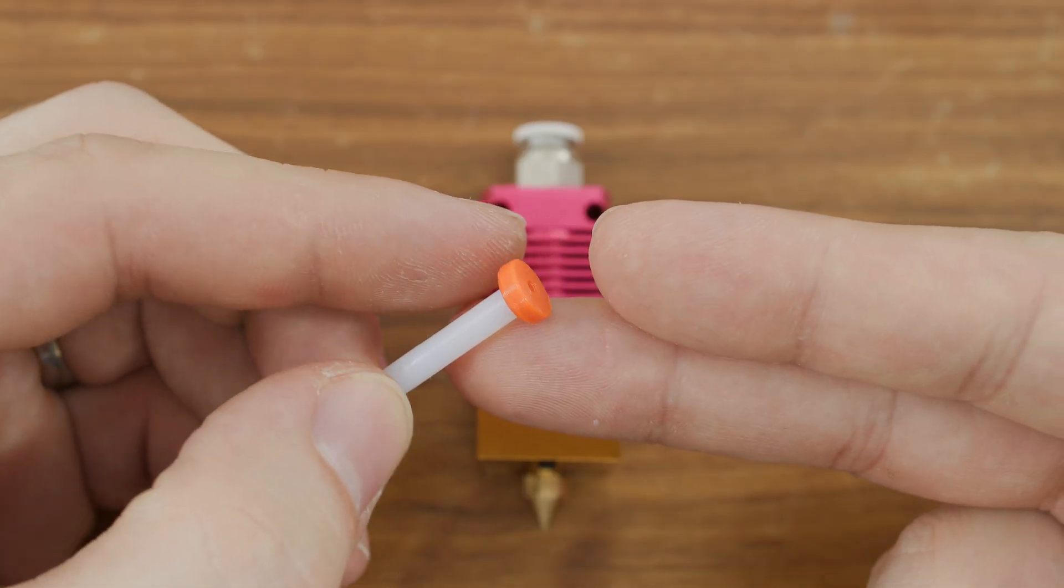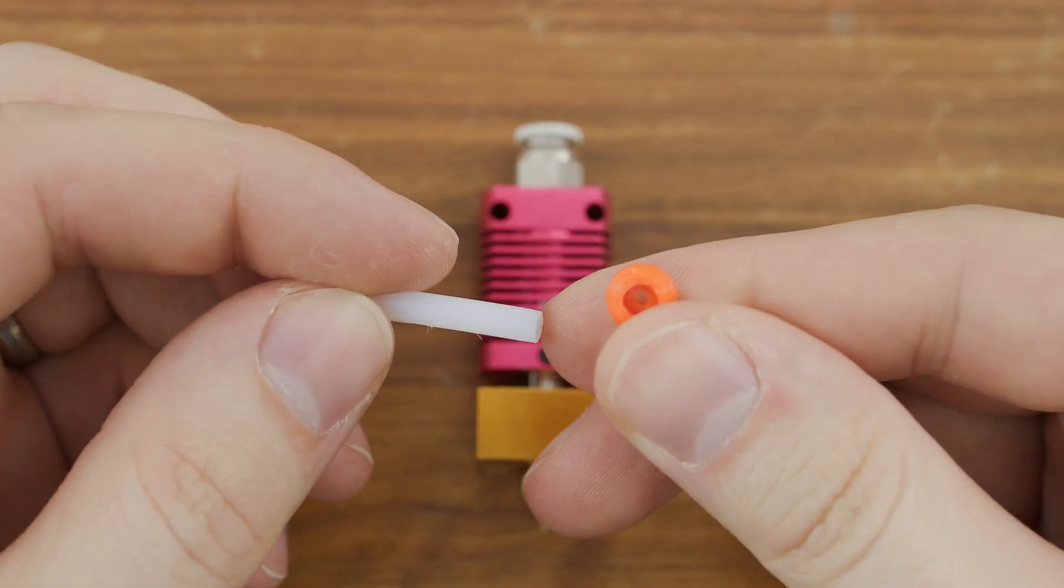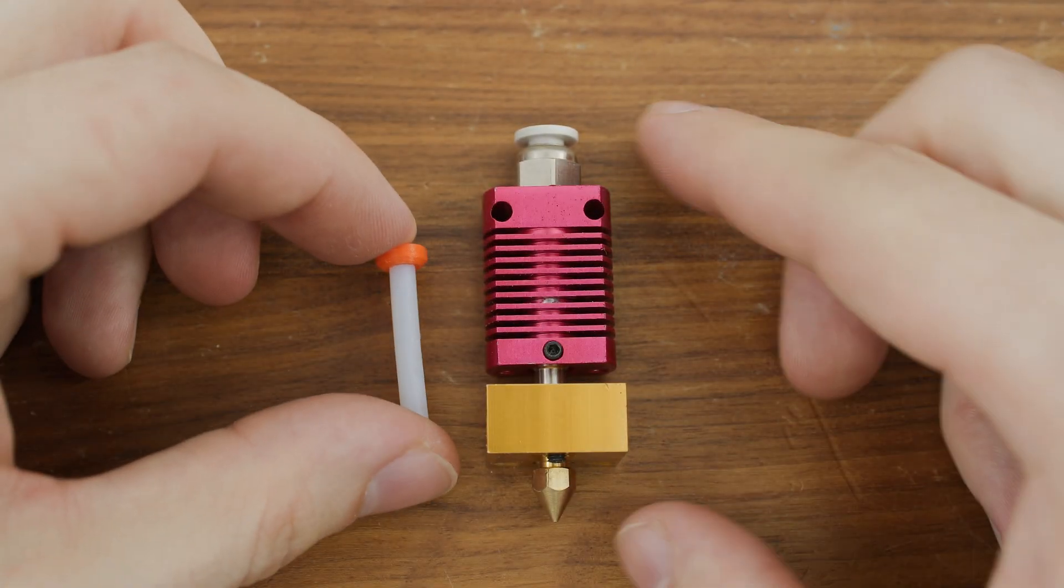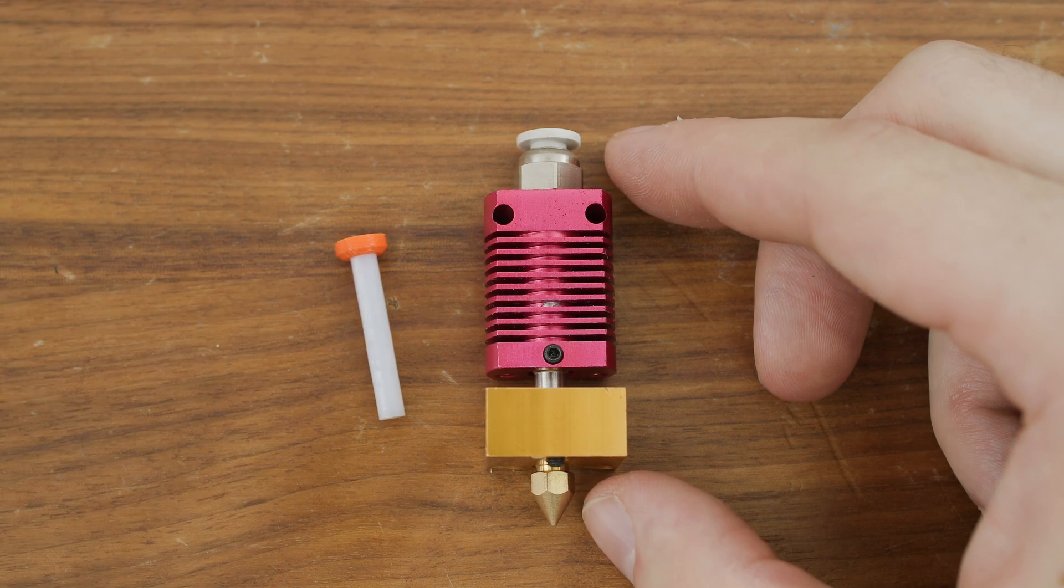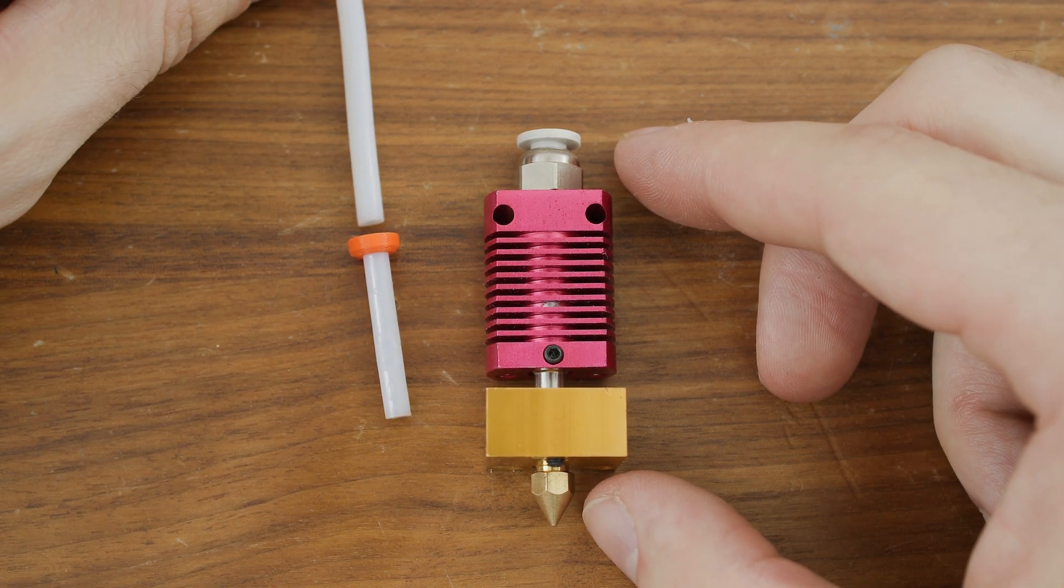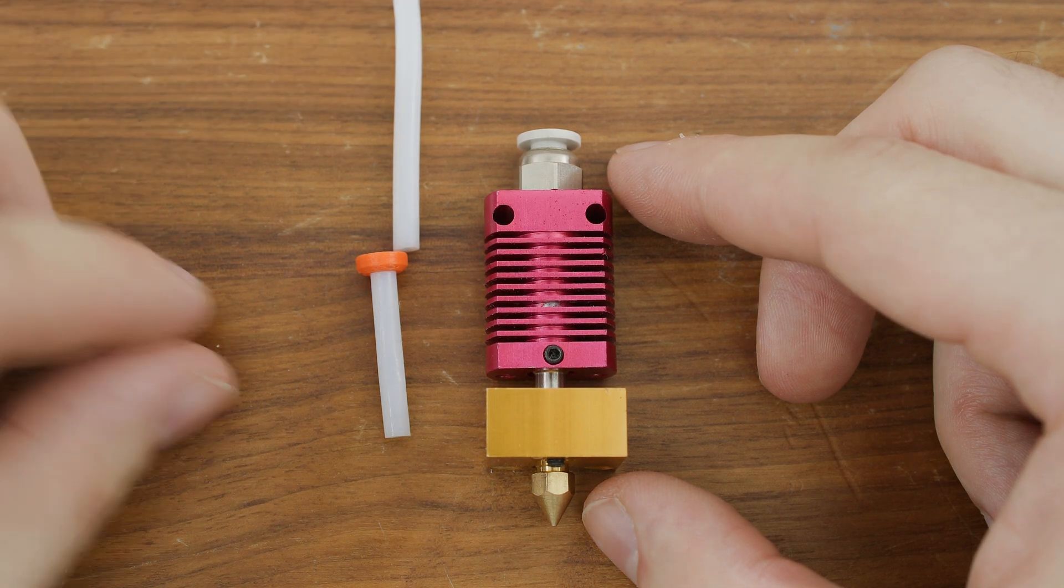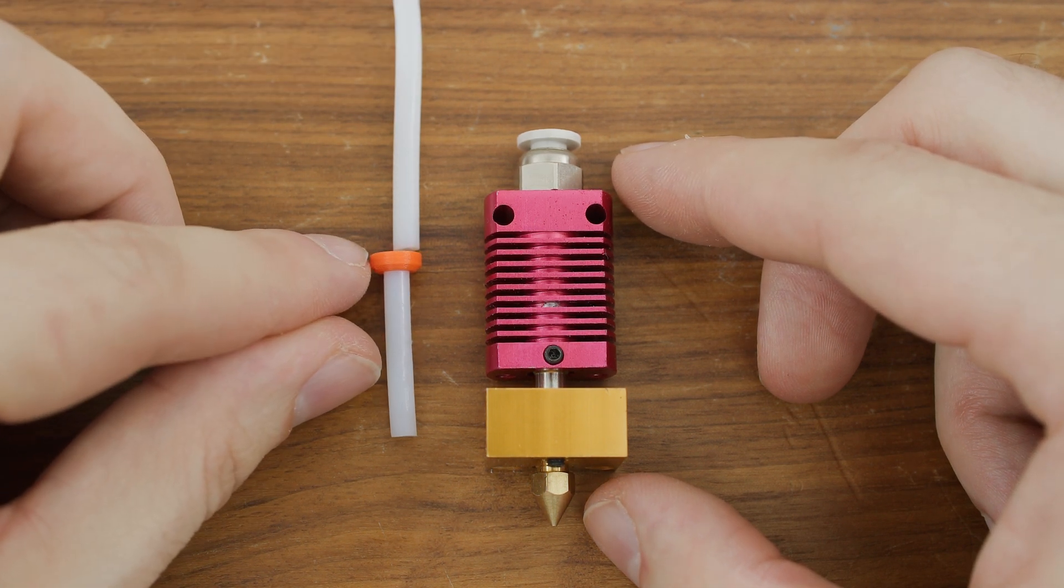To avoid this, we can use this separator. It works by locking a small piece of PTFE tube in place. This piece is then permanently pressed against the nozzle, so there is no risk of filament settling there. The rest of the PTFE tube is normally locked in the pneumatic connector.